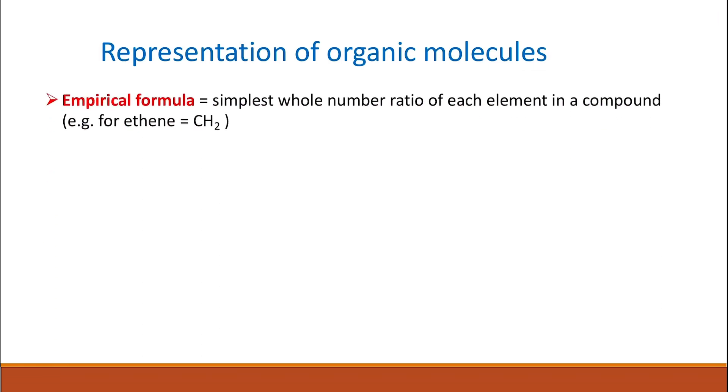We are all familiar with the empirical formula. The empirical formula is the simplest whole number ratio of each element in a compound. So if you have a compound, for example, like ethene, that has two carbons and four hydrogen, the empirical formula for this molecule will be CH2 because this is the simplest whole number ratio for all the elements.